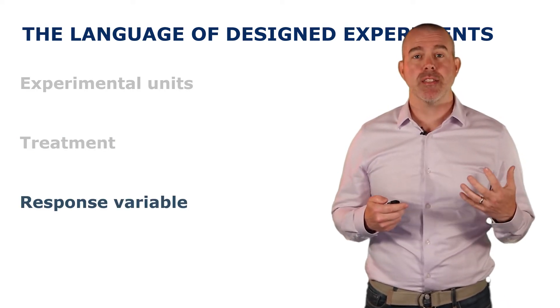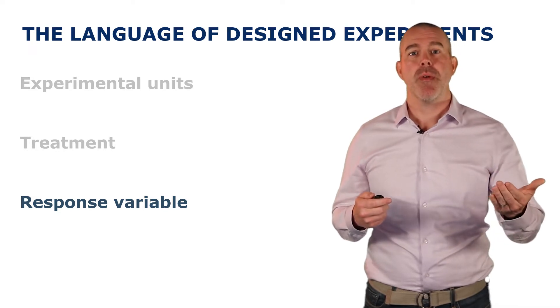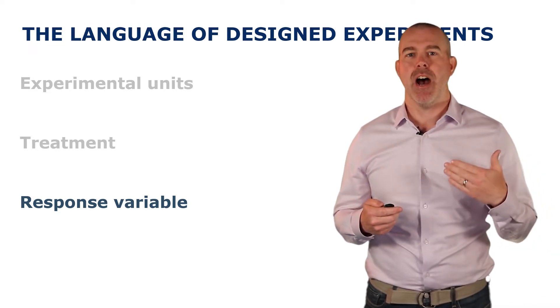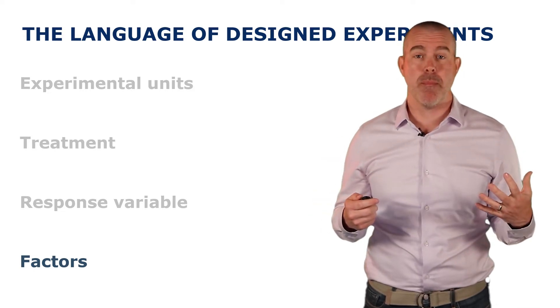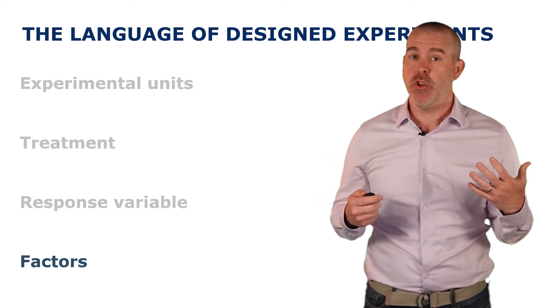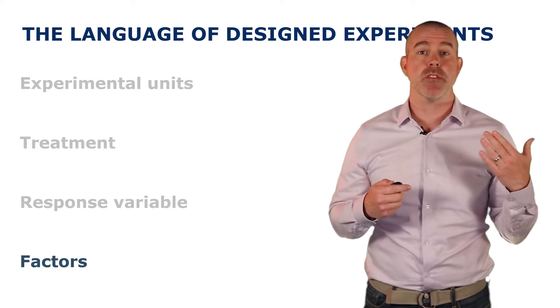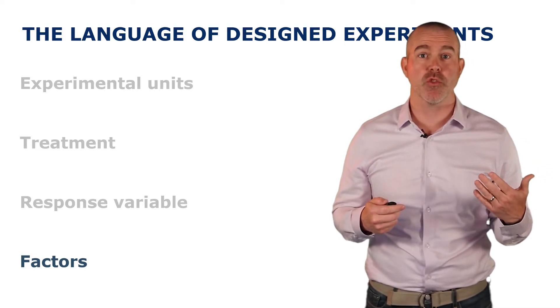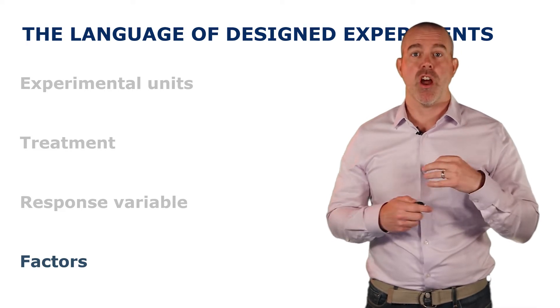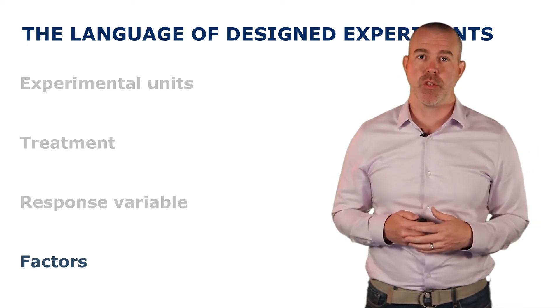The third is the response variable. That depends on the experiment. That's the thing you're measuring as the outcome. And fourth is factors. These are anything that might affect that response variable. And you need to be aware of this because maybe there's something else that's affecting that response variable that you didn't consider and control for. So factors are anything that can affect the response variable.